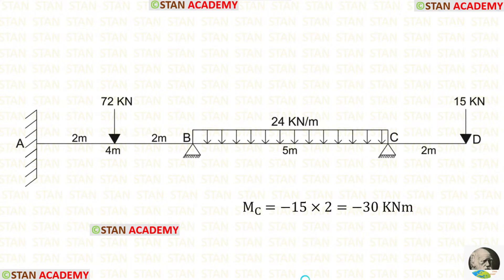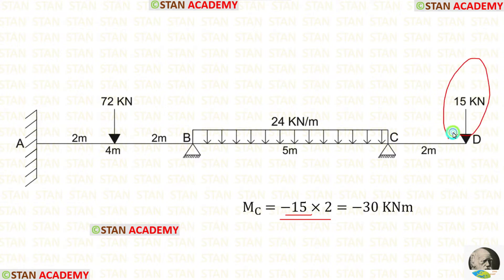Here we have to be very careful. When we apply the load from the overhanging span, we have to always apply it with a negative sign. Because of that, we are getting a negative moment.